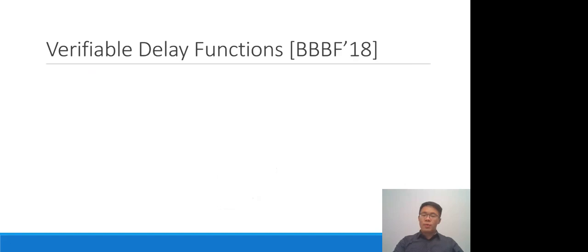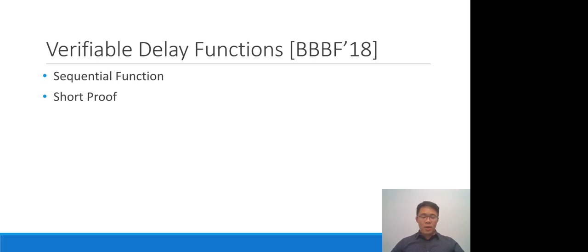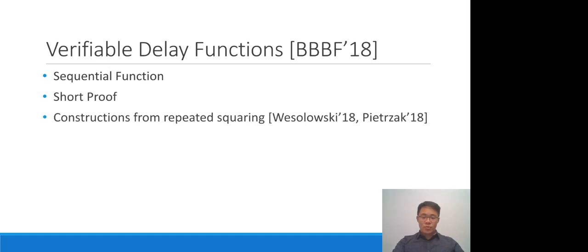We won't go into the full formal definition of VDFs today, but roughly speaking the definition has two components. First, the function itself needs to be a sequential function, meaning it is slow to compute even for an adversary with high levels of parallelism. Secondly, while computing the function you should also be able to compute a short proof allowing others to efficiently verify the output. There are a couple of known constructions of VDFs — two from repeated squaring, done by Wesolowski and Pietrzak separately in 2018, and one from isogenies by De Feo and others.